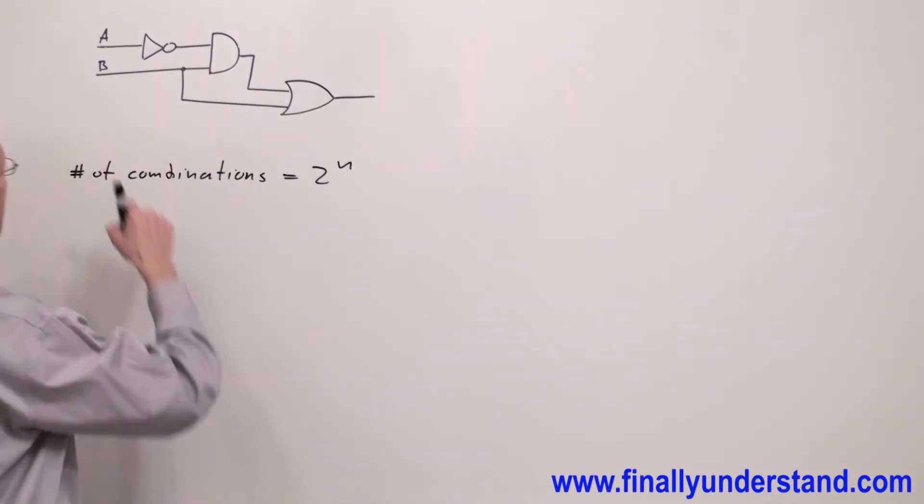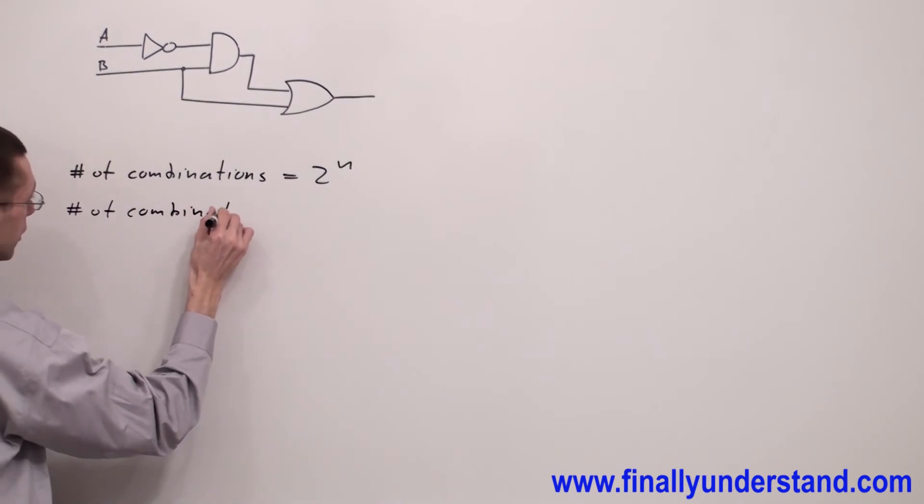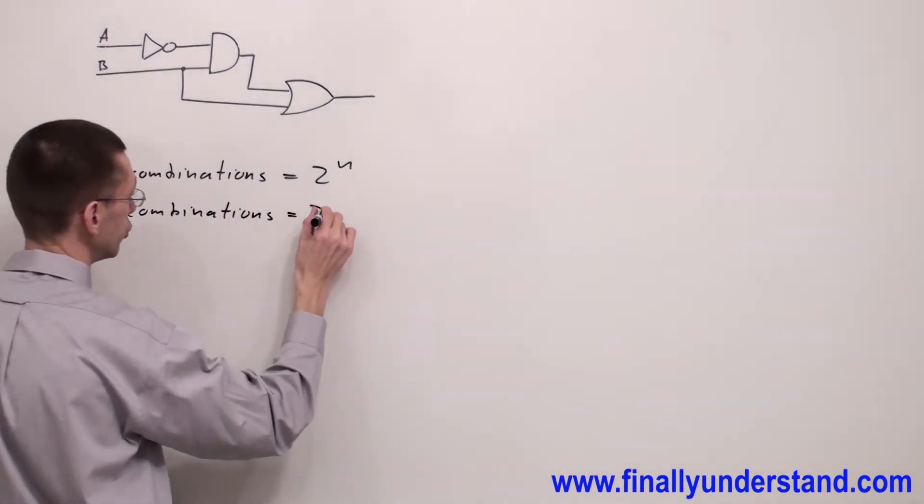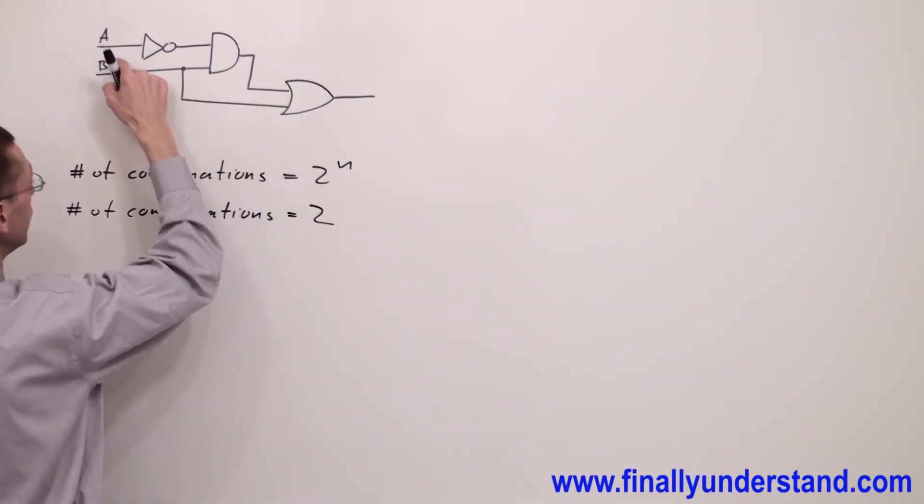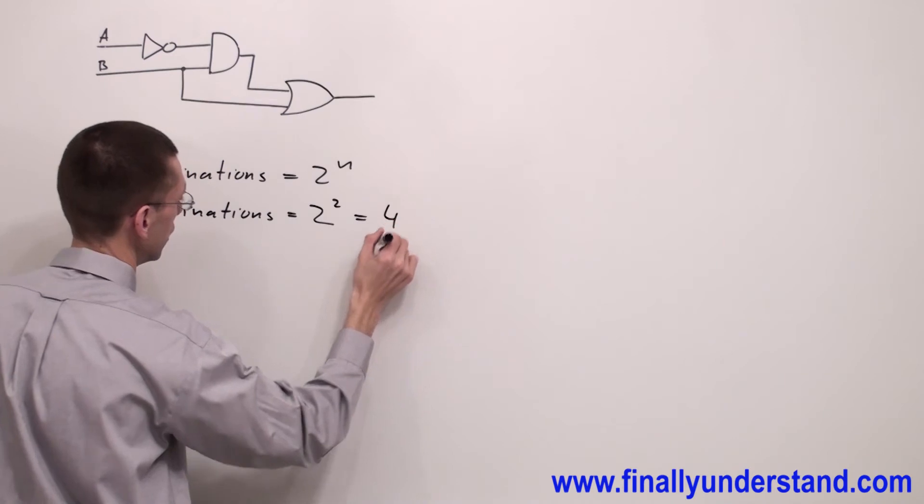Different inputs, I mean like A and B in this case. So that's why I'm going to say number of combinations is equal to, and I have two inputs to the second power, which is equal to 4.